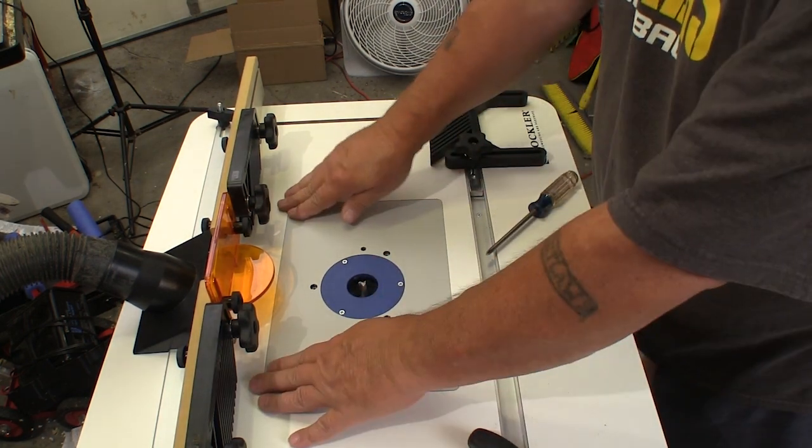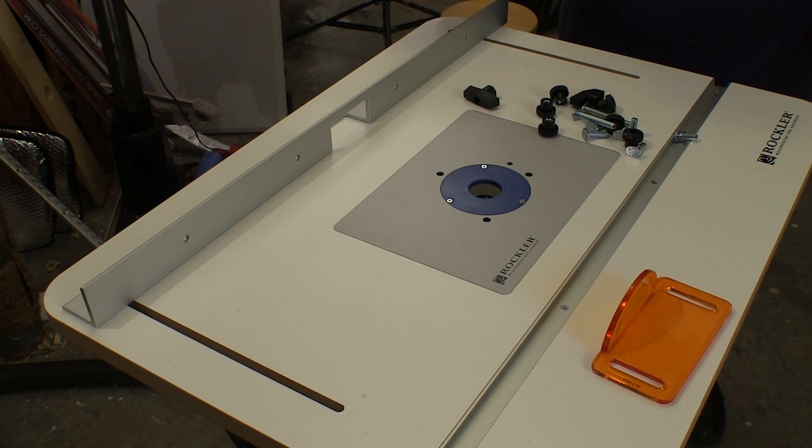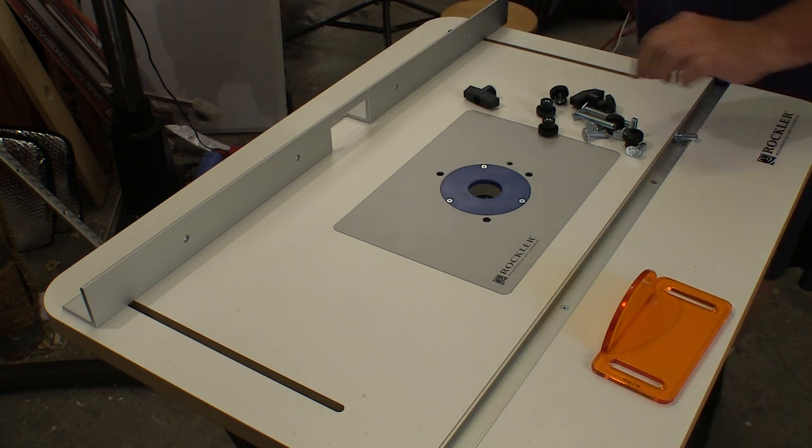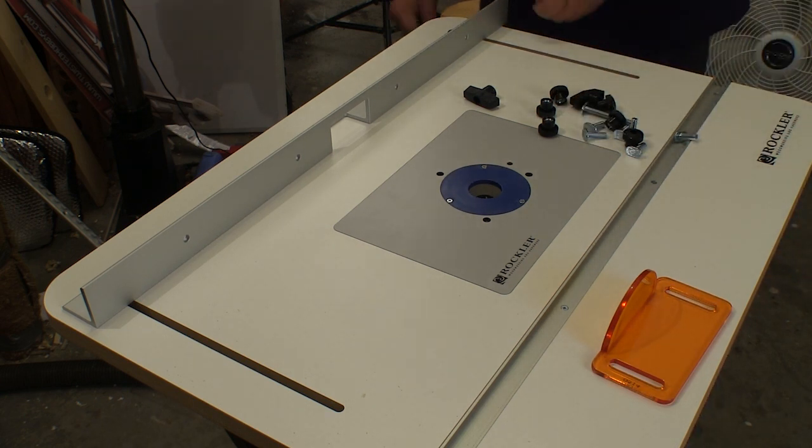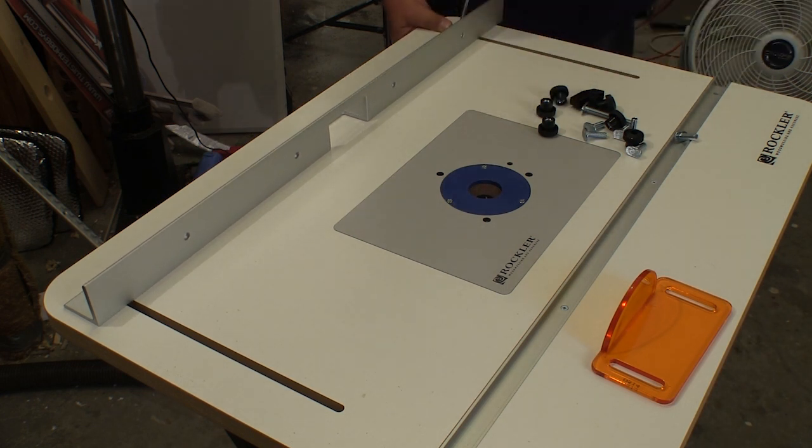The first step to installing the fence is to put the aluminum backer extrusion in place. For now, just put the hardware that holds the fence to the table on loosely so we can adjust it.